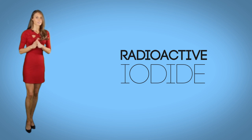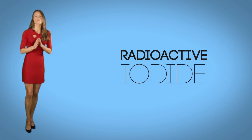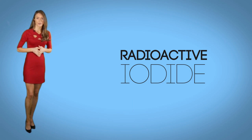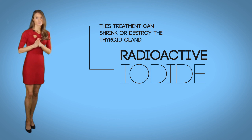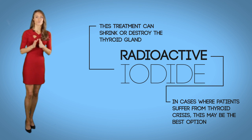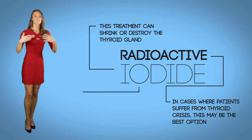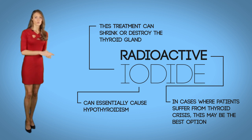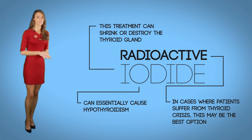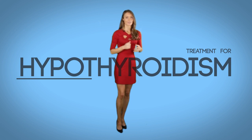Radioactive iodine can be taken via tablet. Since the thyroid absorbs most of the iodine in the body, there is almost no exposure to the rest of the body. Essentially, this treatment shrinks or destroys the thyroid gland. In cases where patients suffer from a thyroid crisis — also known as a thyroid storm — this may be the best option. It can cause hypothyroidism, however this condition is much less dangerous and easier to treat.